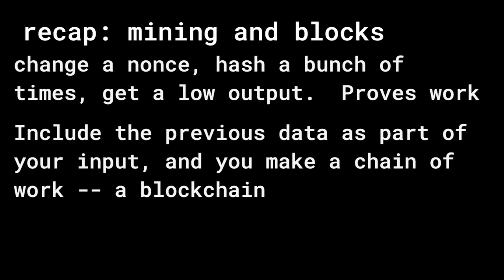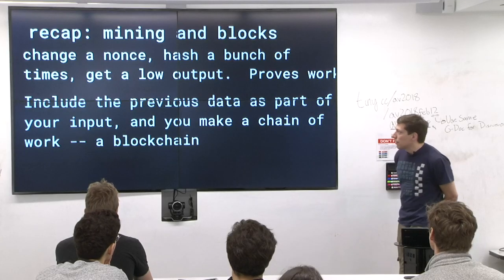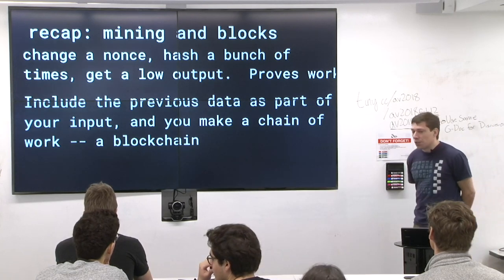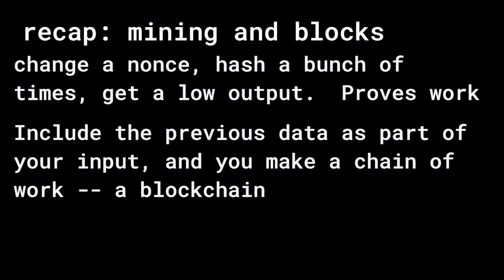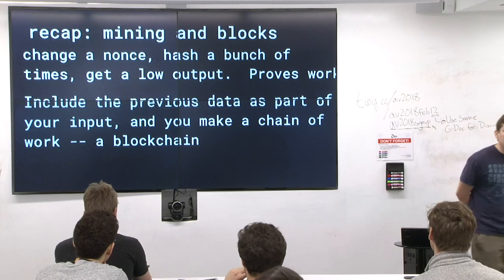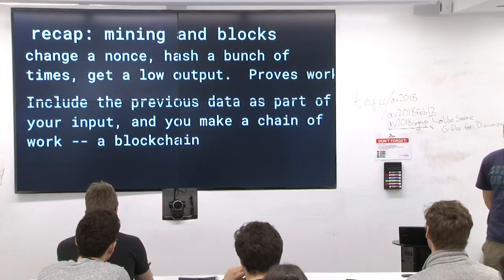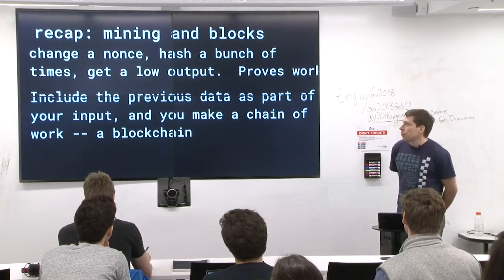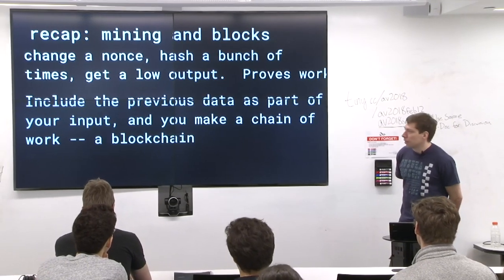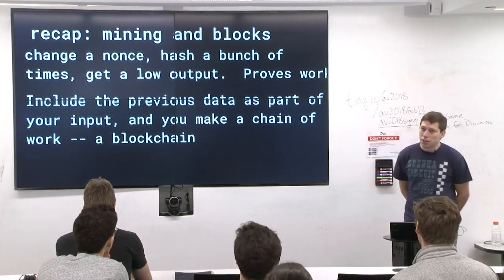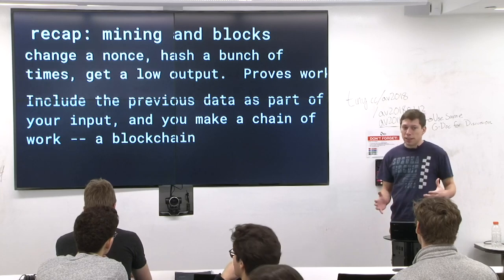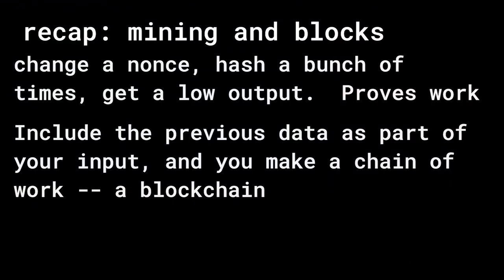Signatures are really cool and a necessary thing for this network to work. Mining and blocks: you change a nonce, hash a bunch of times, trying to get a low output. You're proving work by repeatedly going through different nonces, trying to find a certain hash output — there's no shortcut, you just have to guess and check. And if you include the previous data as part of your input to that hash function, you can make a chain of work. That's what we call a blockchain.